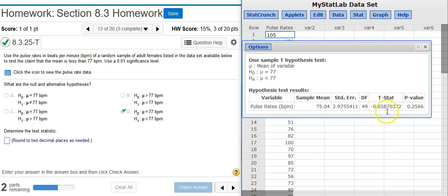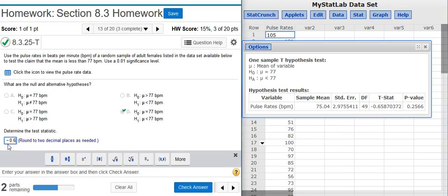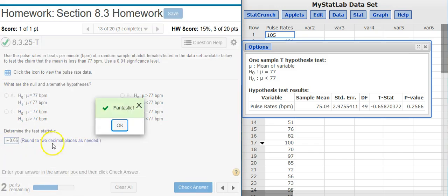So the test statistic is going to be the second-to-last number here in this table in the results window. So I'm asked to round to two decimal places. Fantastic!